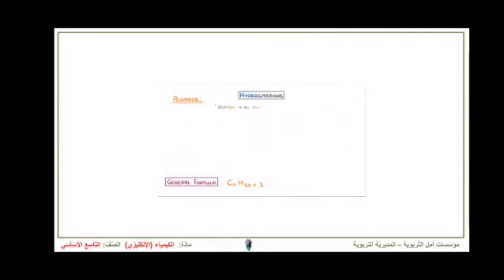For example, octane is an alkane with 8 carbon atoms. What is its molecular formula? Well we know that for octane n will be 8 because that's how many carbons it has.